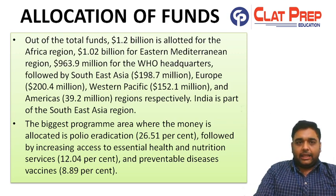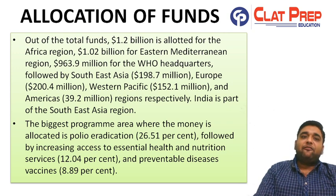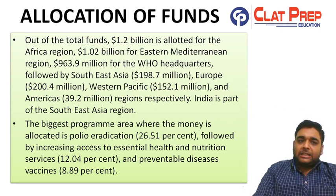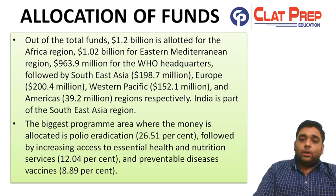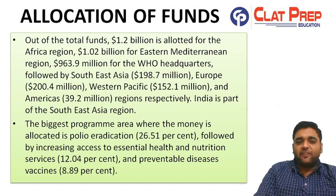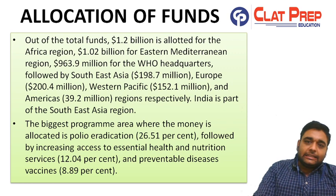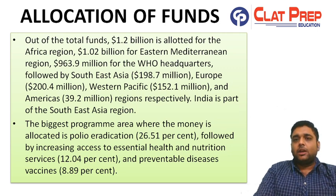Regarding allocation of funds, the majority of funds are allotted to the Africa region, followed by the WHO headquarters and then the South Asian region. The biggest program area by allocation is polio eradication at 26.51%. This is the funding pattern of WHO, and if the US stops funding WHO it would be a major setback for the organization.